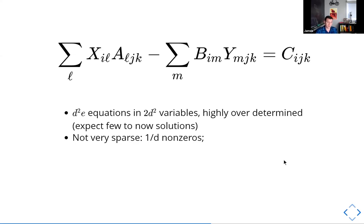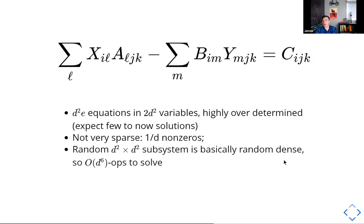There's a lot of non-zeros here. And a random sampling of D squared rows will look basically like a random dense matrix. Not exactly, but it'll come close. And so your obvious solvers don't seem to benefit from this.